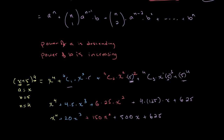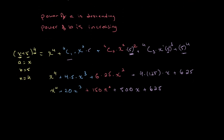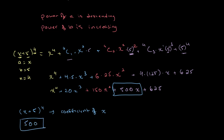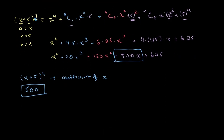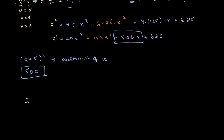Another type of question you may be asked is to find a specific coefficient. For example: in the expansion of (x + 5) to the fourth power, find the coefficient of x. We already solved this — the coefficient of x is 500, because the expression contains plus 500x. But it won't always be this easy, especially for much larger expansions. So let's say we're asked: given (2 minus x) to the power of 25, find the coefficient of x to the power of 20.